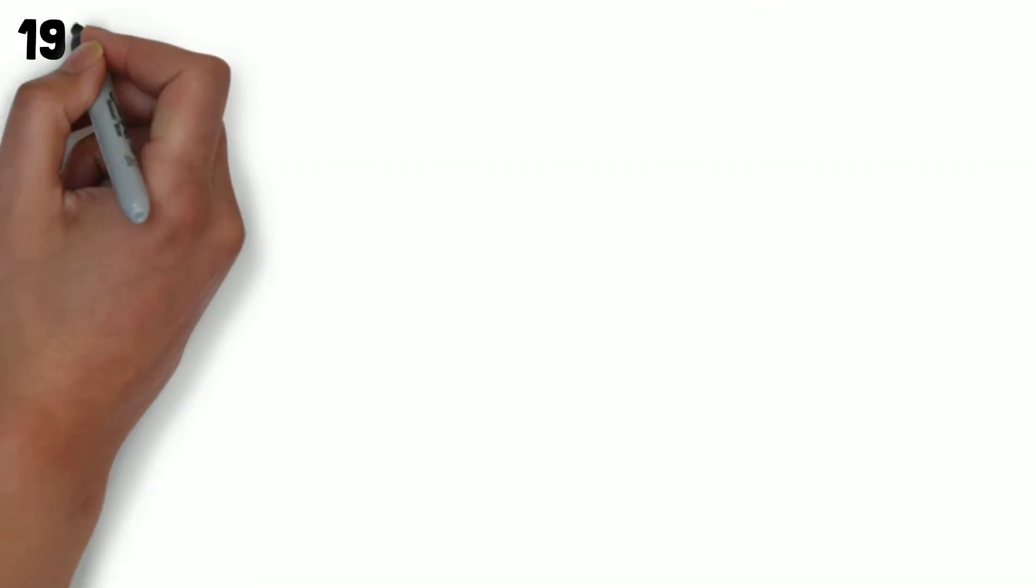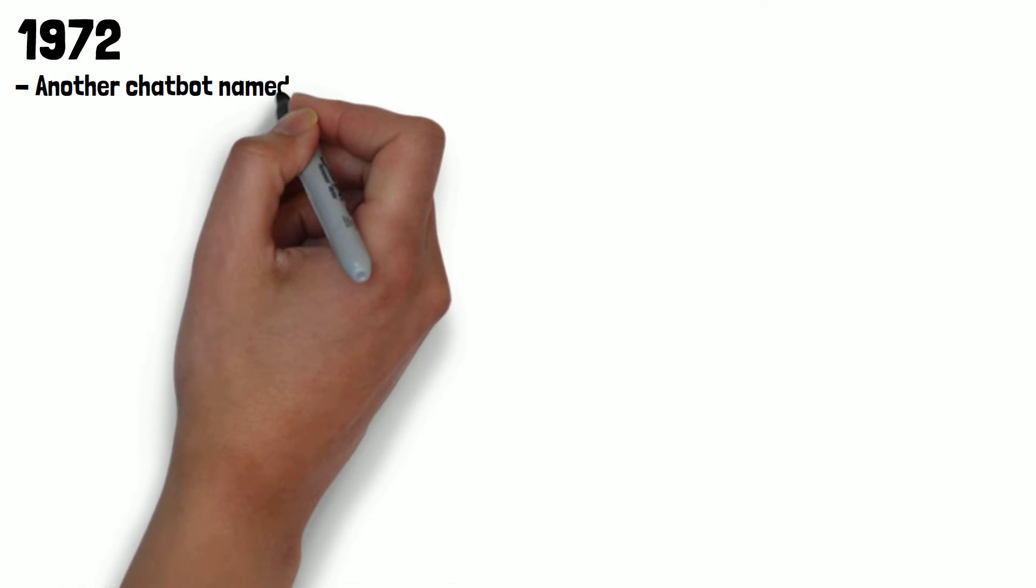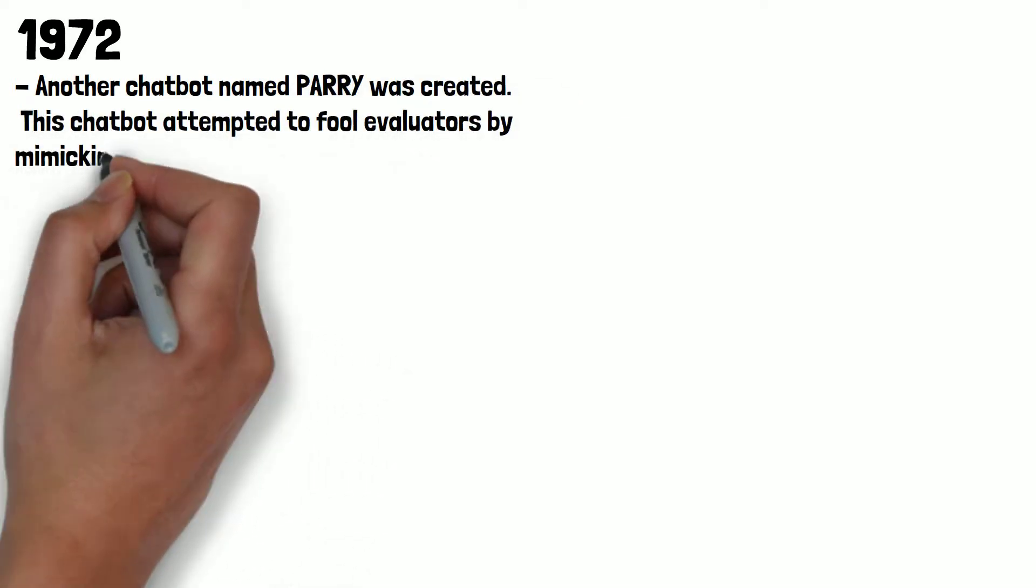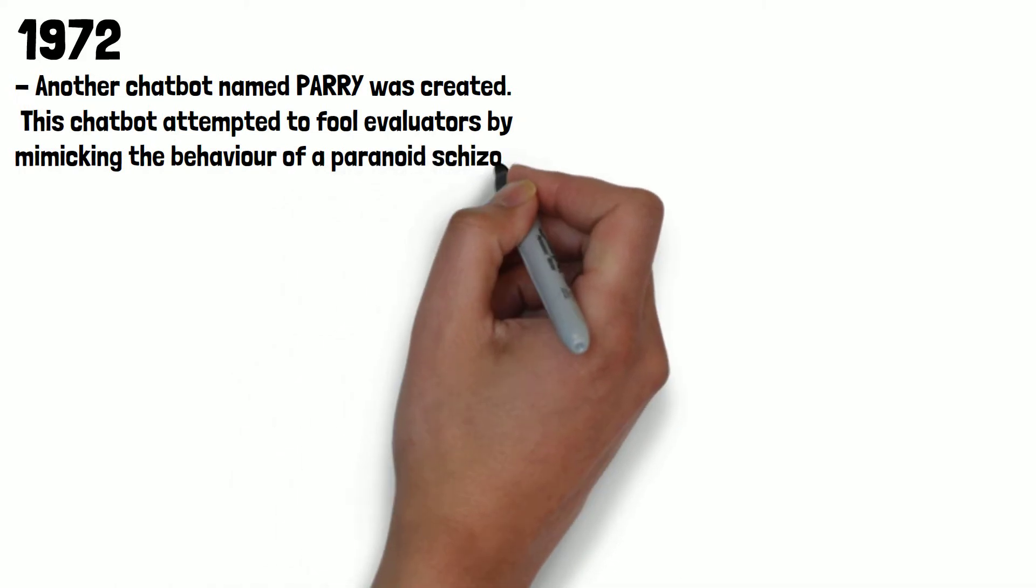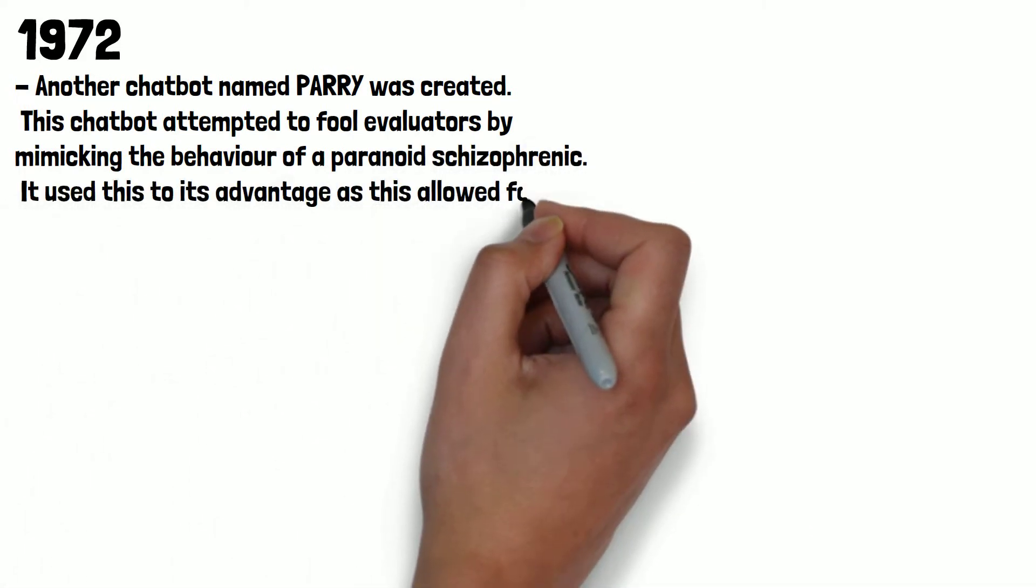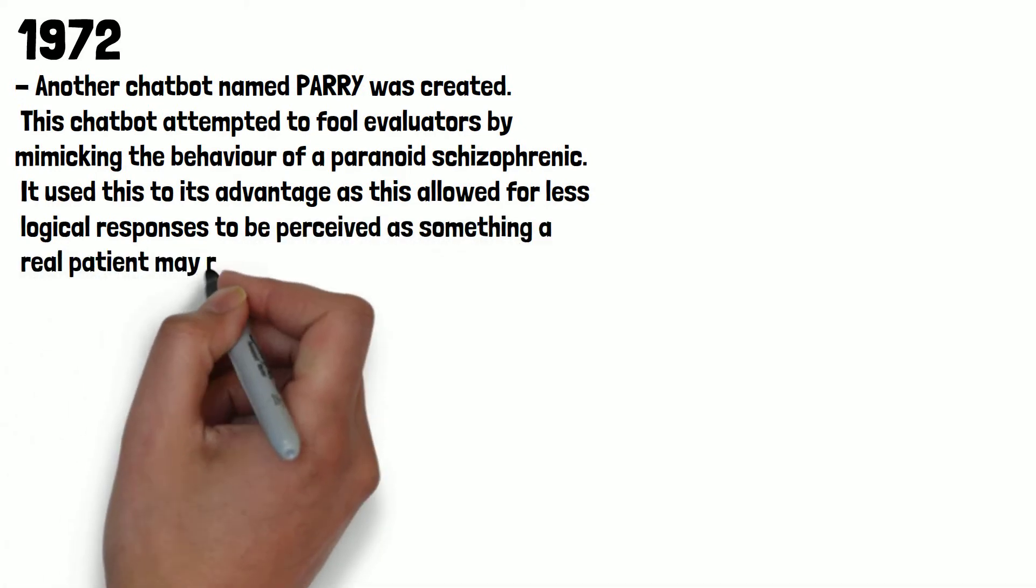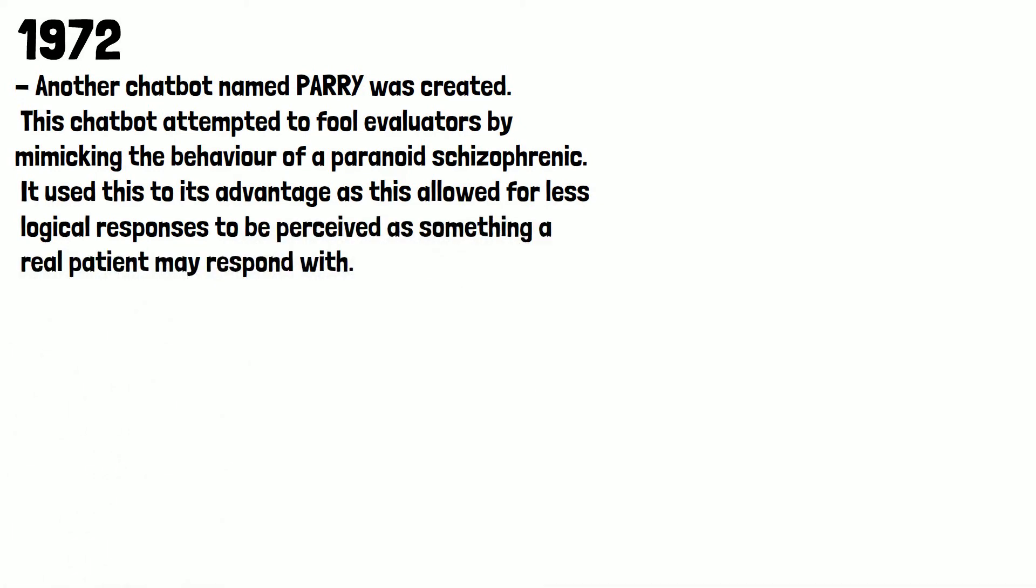In 1972, another chatbot named PARRY was created. This chatbot attempted to fool evaluators by mimicking the behavior of a paranoid schizophrenic. It used this to its advantage, as this allowed for less logical responses to be perceived as something a real patient may respond with.